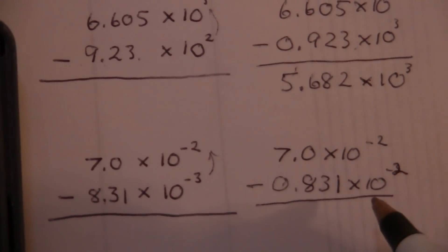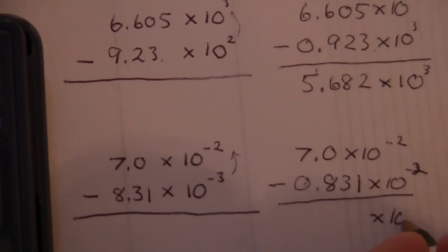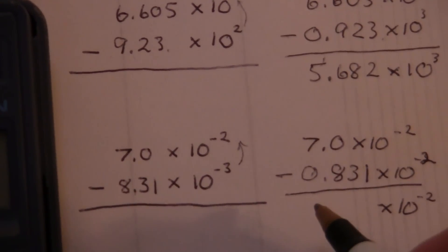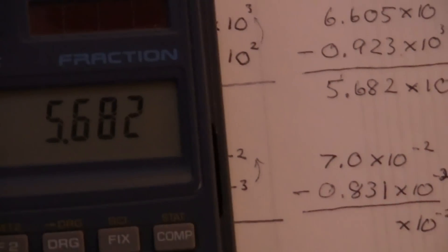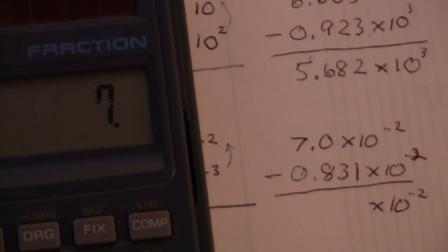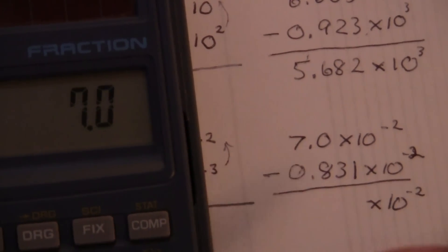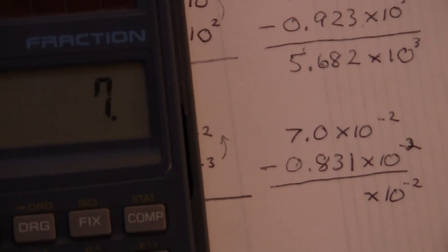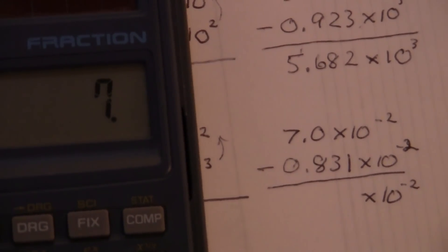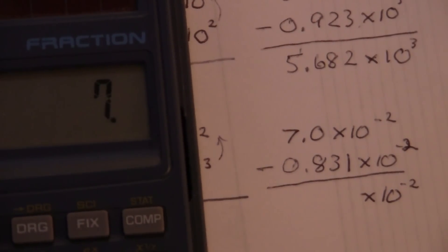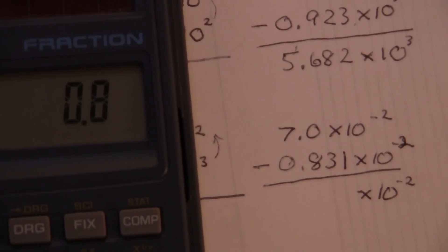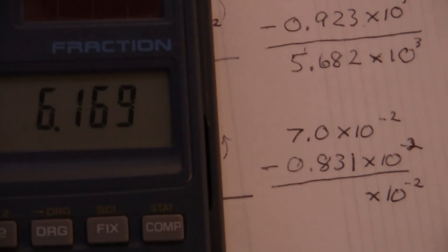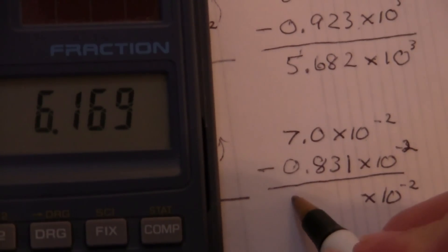All right, so now that we have the same exponent, we can do the math. And we'll have 7.0 minus 0.831, and we get 6.169.